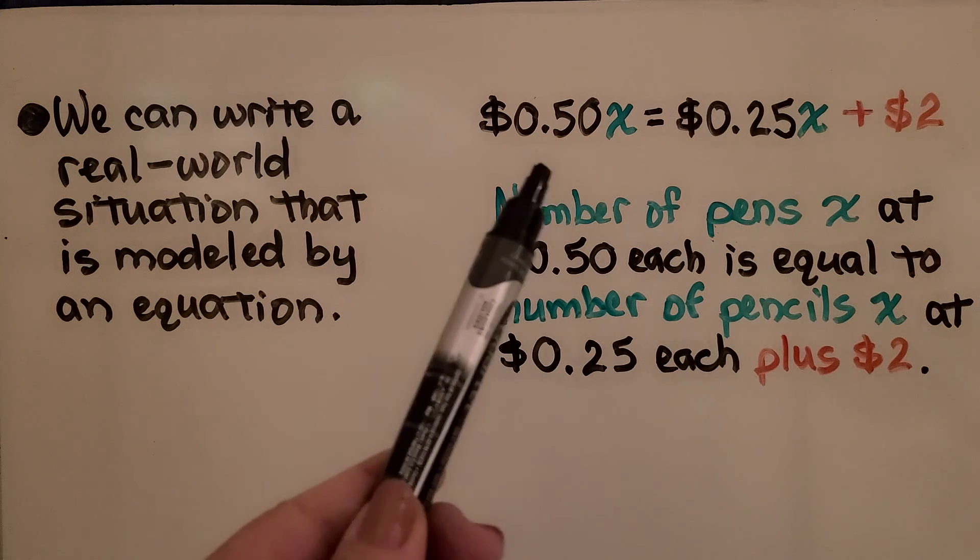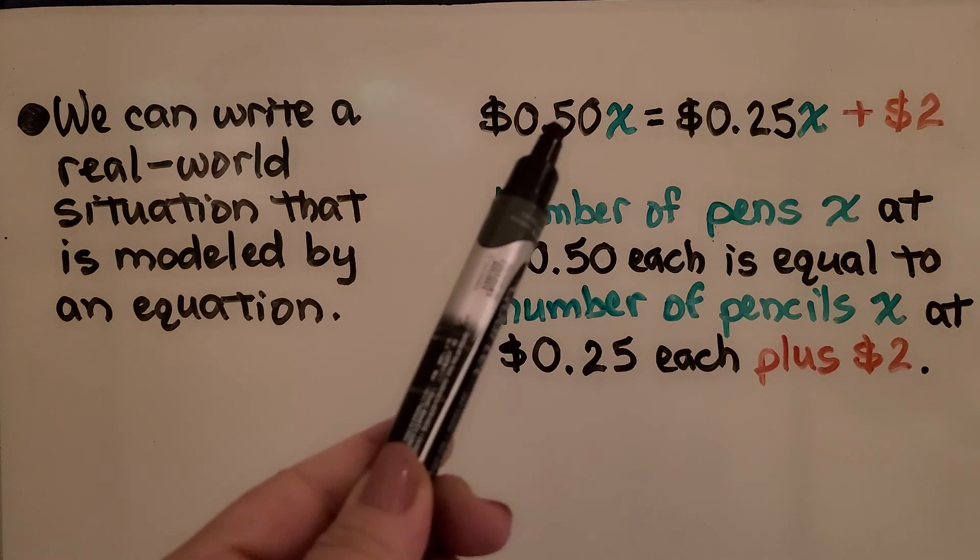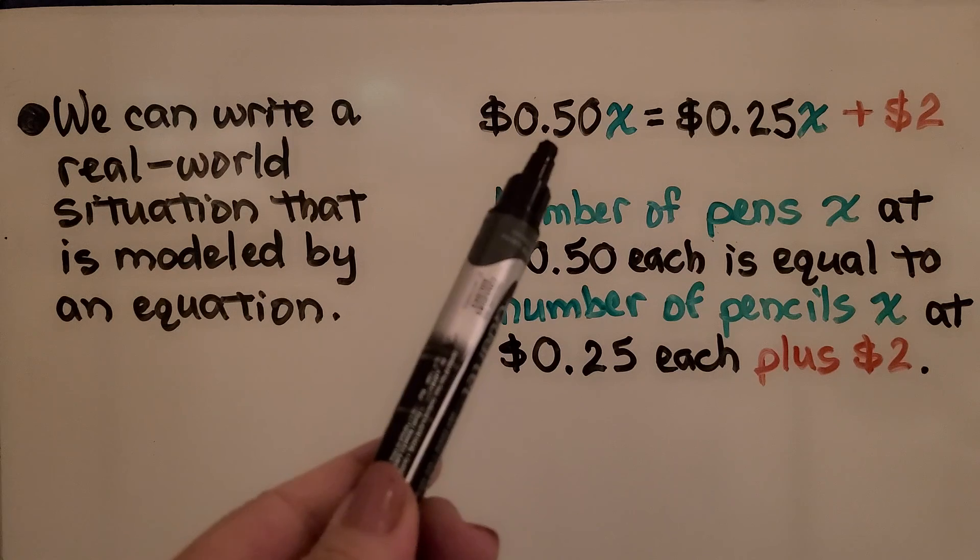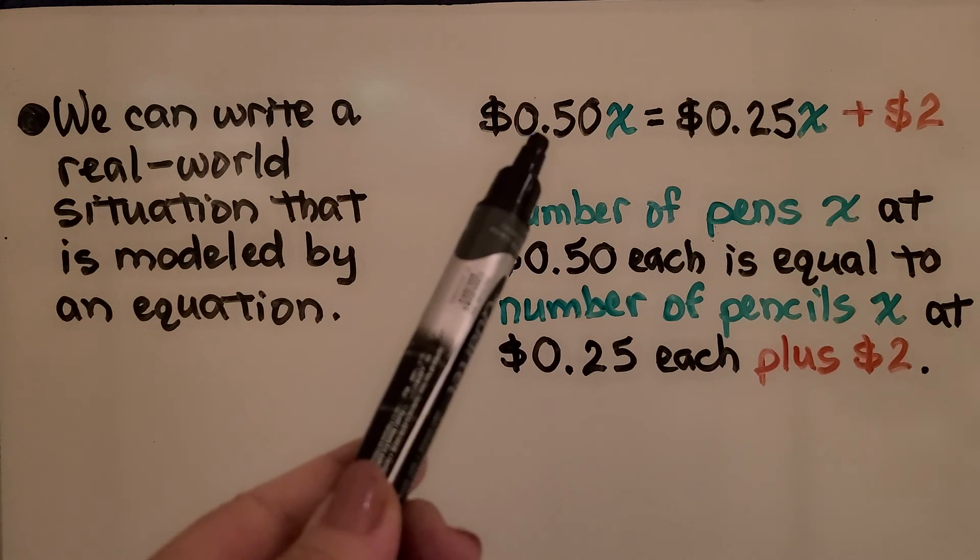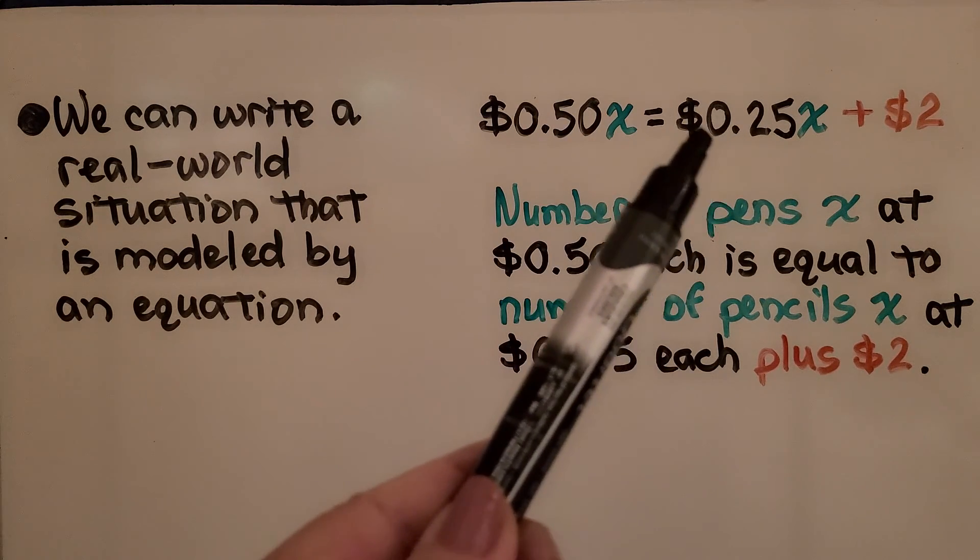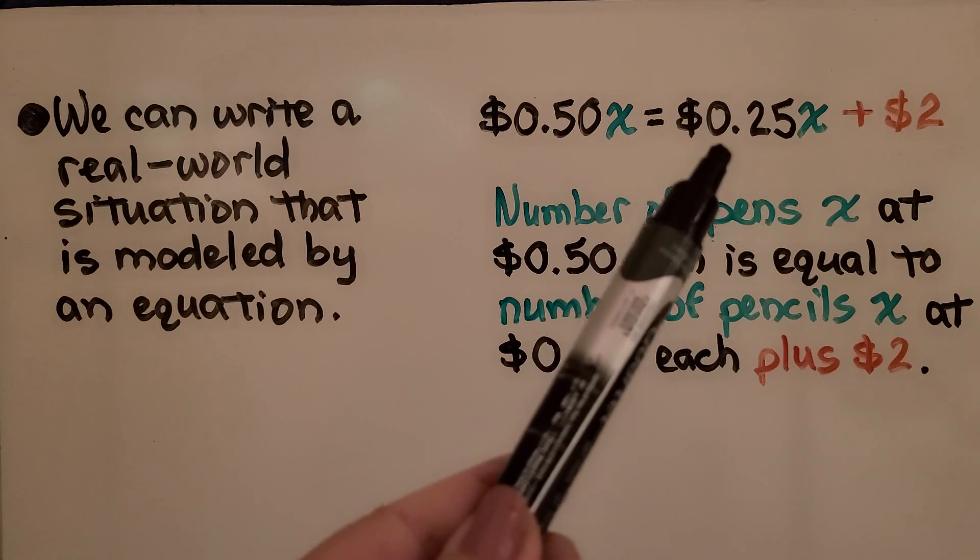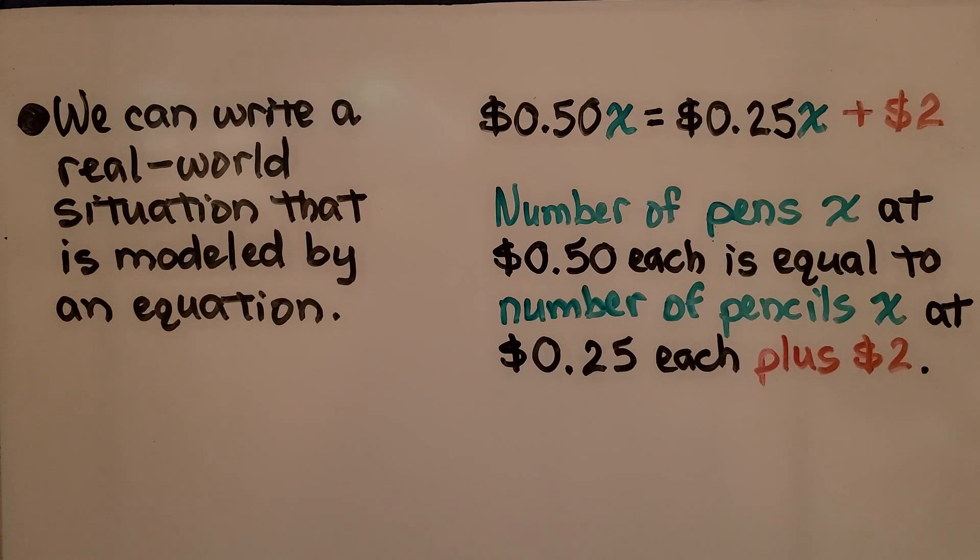If we had 0.5, we could write it as $0.50 to be 50 cents. And if we had 0.25, we could write it as $0.25 for 25 cents.